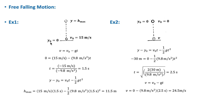To find the maximum height we use the displacement equation, substituting v₀ and t = 1.5 s at the maximum height, and we get a maximum height of 11.5 meters.